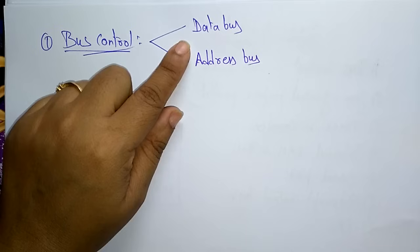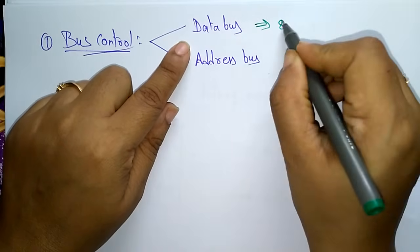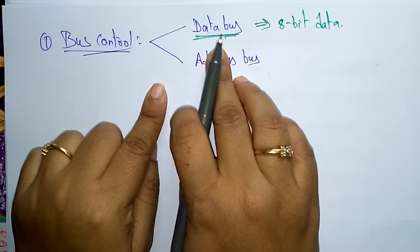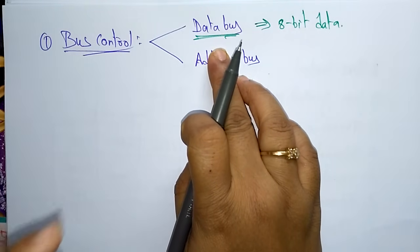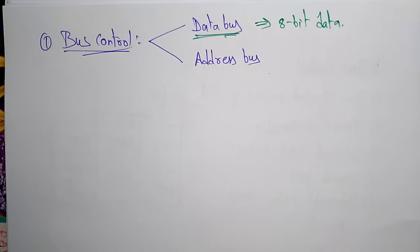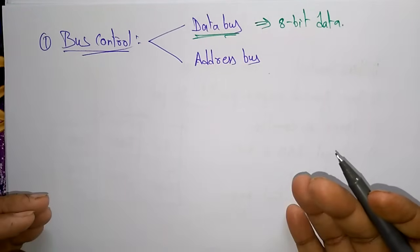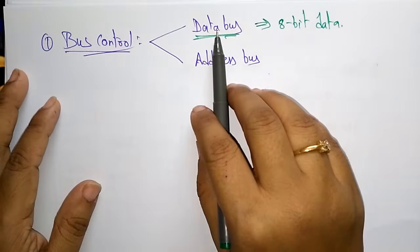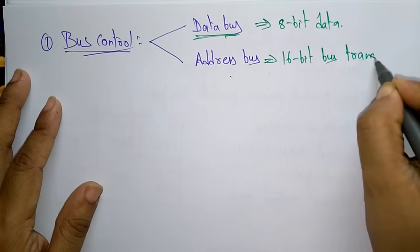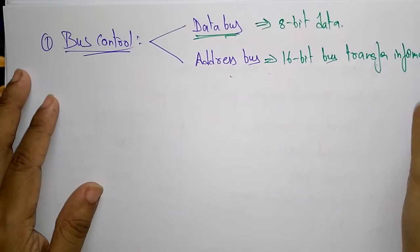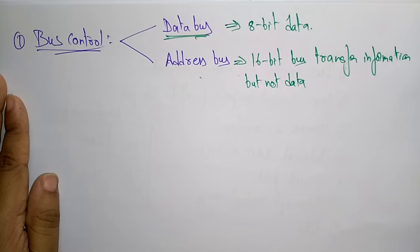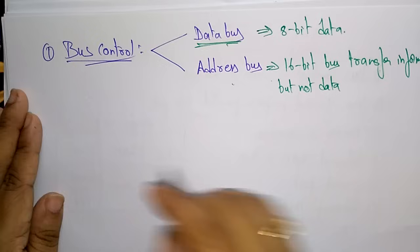The data bus is used to transfer 8-bit data. It acts as an electronic channel through which data travels. The wider the width of the bus, the greater the transmission — so a larger bus size allows more data to be transmitted. The address bus is a 16-bit bus. It transfers information, not data — the address bus is only used to transfer addresses, not data.